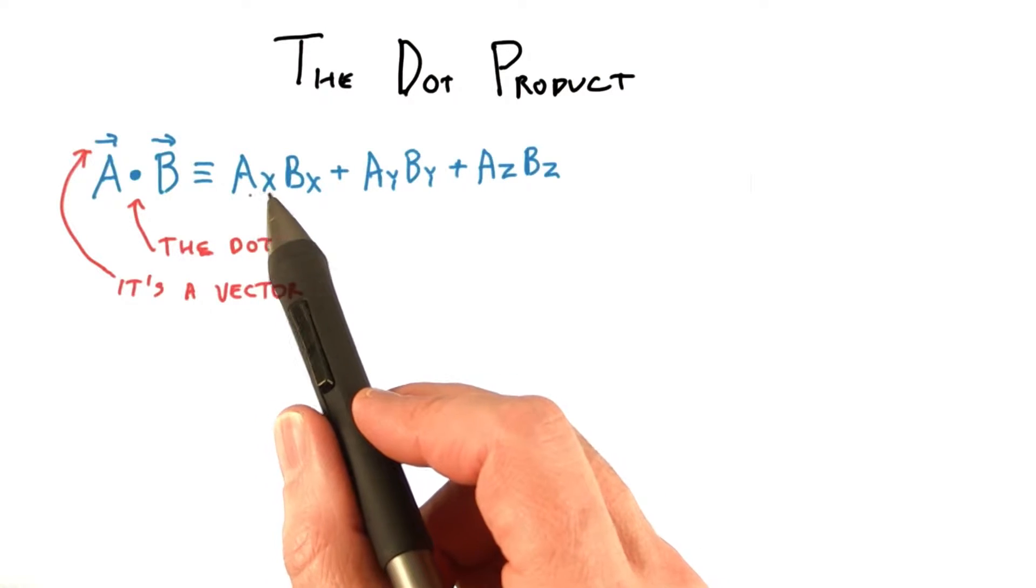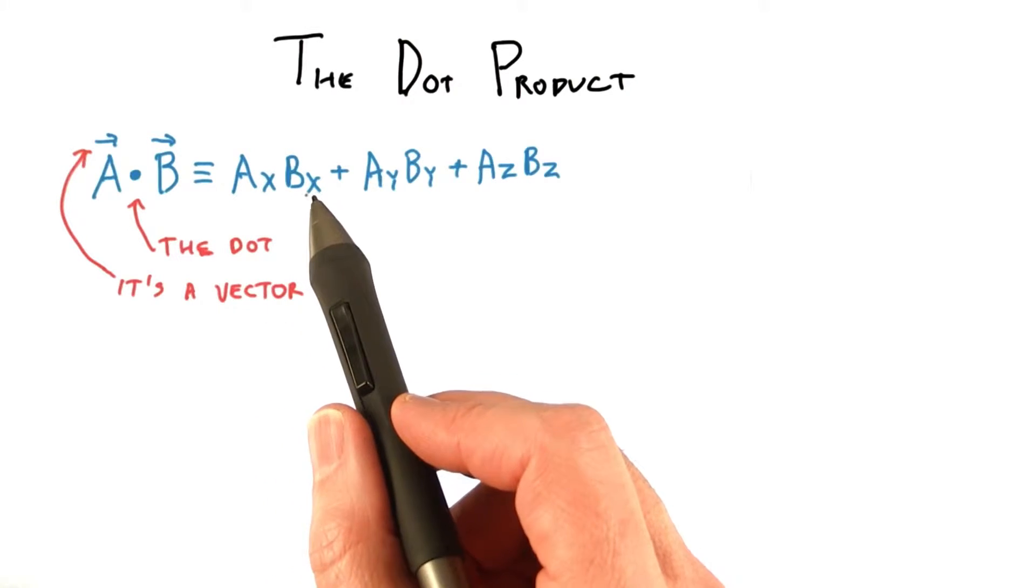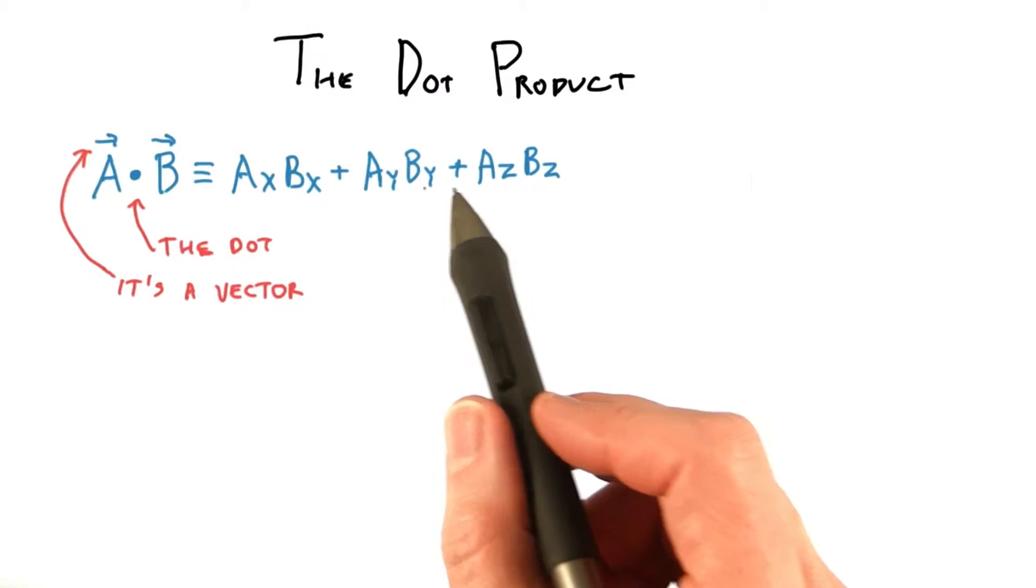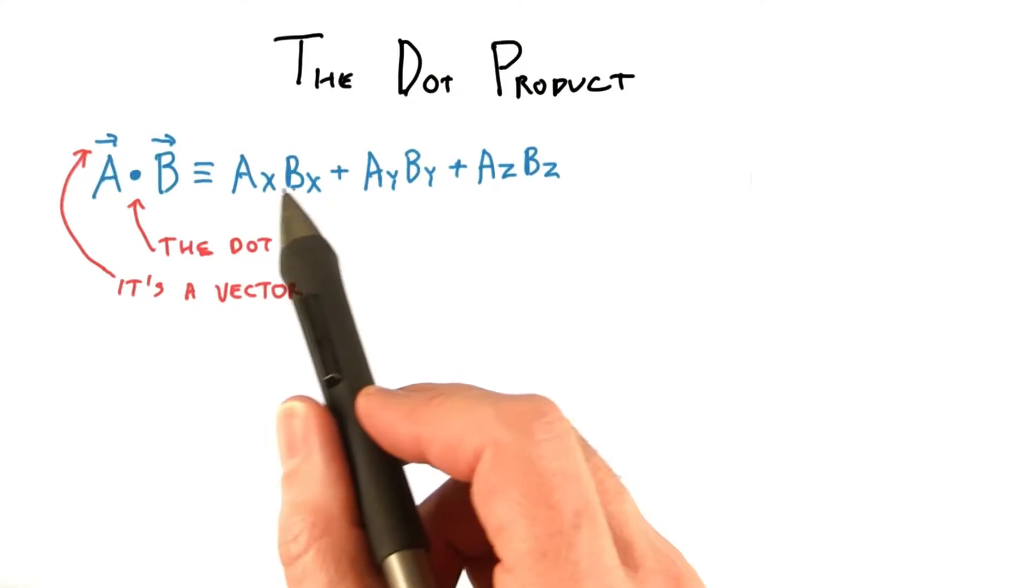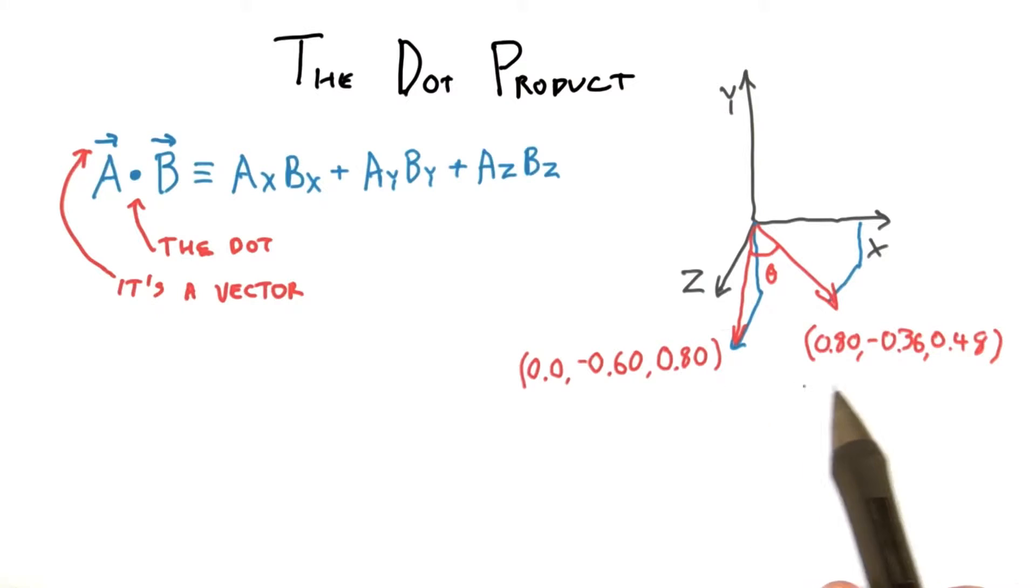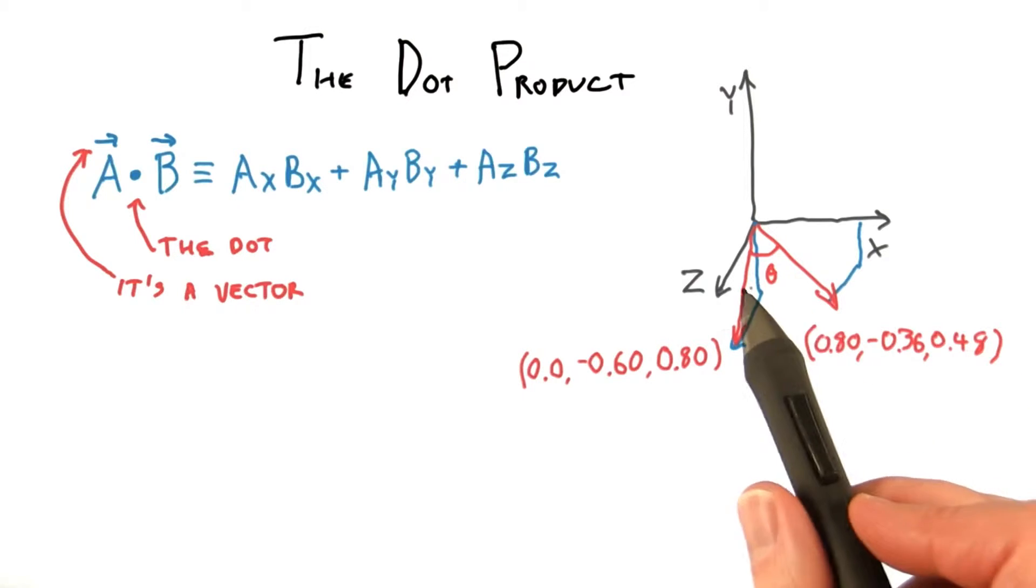The dot product is equivalent to multiplying the x value of A times the x value of B, and so on with y and z, and then adding these up together. Say I have these two normalized vectors, and I want to find the cosine of the angle between them.